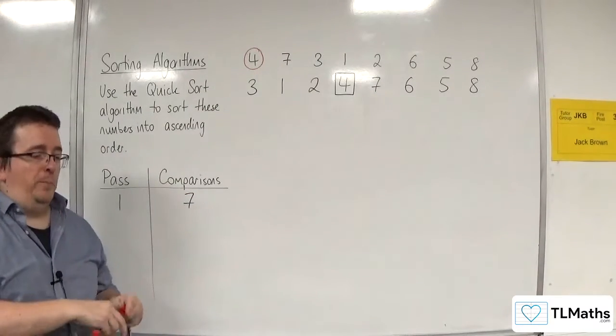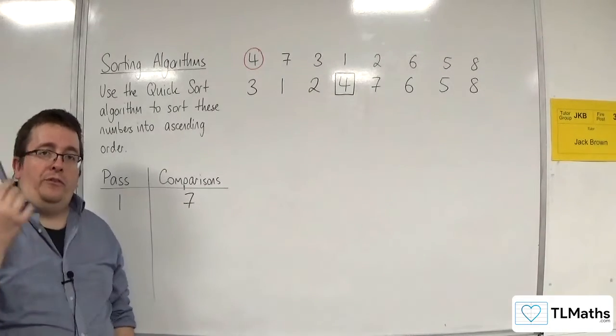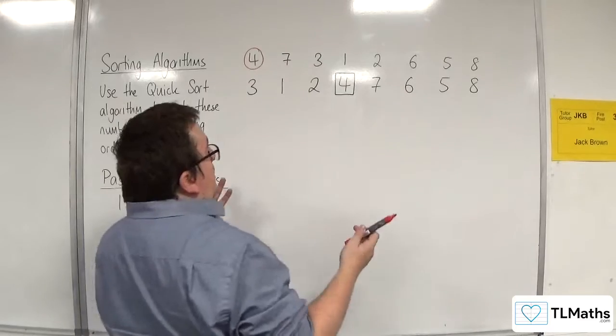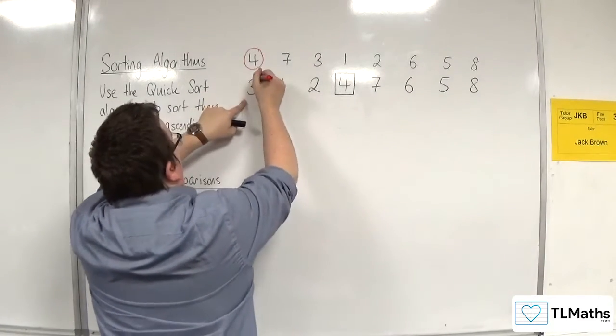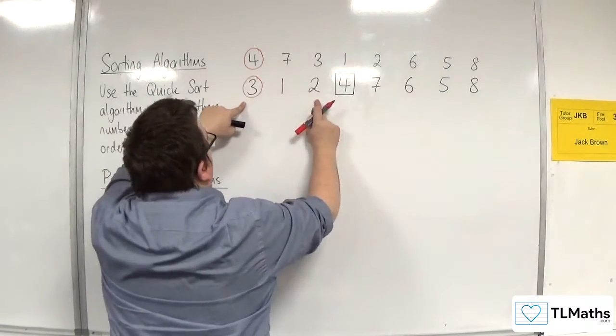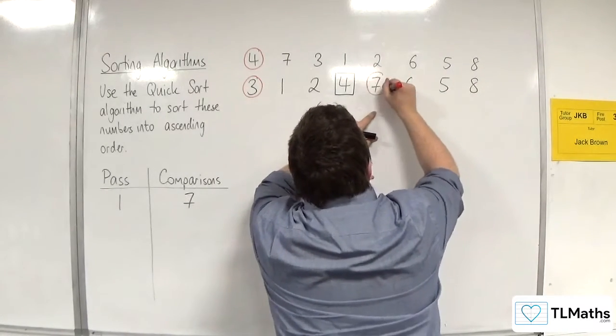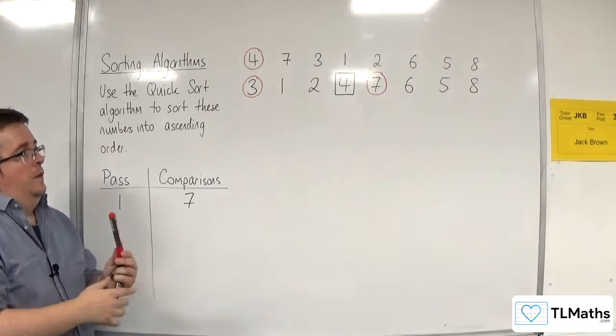Right, so we go on to the next pass. So what we do is we circle the first number in each sublist. Now, it's a little bit clearer here that this is a sublist, the three, one, two, so three gets circled here. And over here, we've got this other sublist, seven, six, five, eight, so the seven gets circled there.